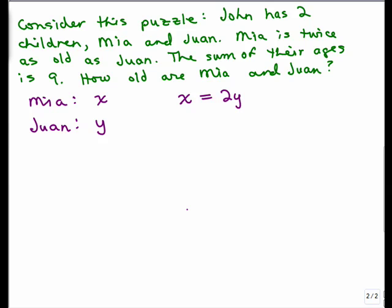The sum of their ages is 9, so I have x plus 2y equals 9. And these are going to be the kind of problems we're dealing with. These are called systems of equations.